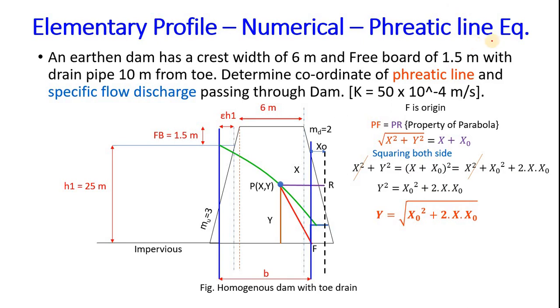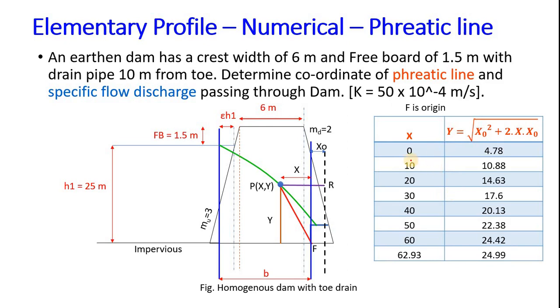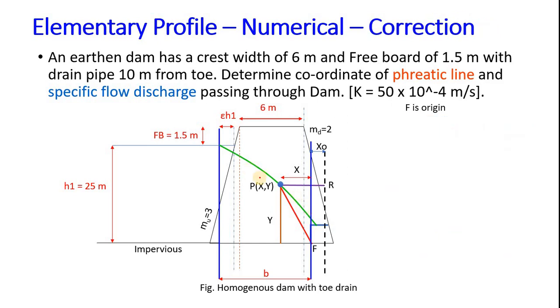This is the equation of phreatic line and it is parabolic in nature. Now when you substitute some values of x, x equals 0 means this point, and x can be up to 62.93 which is this point, and vertically it goes up to here. So when you substitute the value of x, we already know x₀, so you will get these values. And when you plot these values you get a result. Now correction: one thing you should keep in mind is that the phreatic line is parabolic but the starting point isn't across this face directly, it will start somewhere here and exit the face.